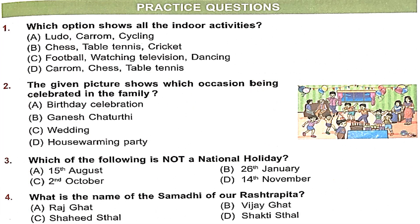Question 1: Which option shows all the indoor activities? Option A — ludo, carom, cycling: cycling is outdoor, so incorrect. Option B — chess, table tennis, cricket: cricket is outdoor, so incorrect. Option C — football, watching TV, dancing: football is outdoor, so incorrect. Option D — carom, chess, table tennis: all three are indoor activities. Indoor activities are those done inside the house. So Option D is correct.